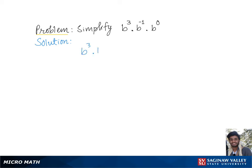To simplify b cubed times b to the negative first times b to the 0th, we'll go over the rule which says whenever we have two or more expressions with a common base multiplied by each other, we keep the base and simply add the exponents together. So here in our problem, we have three exponents with common base b multiplied by each other.